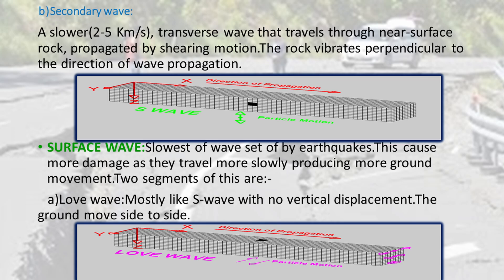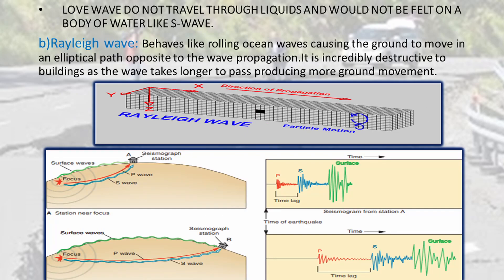Surface waves are the slowest waves set off by earthquakes, but they cause the most damage because they travel more slowly, producing more ground movement. There are two types: love wave and Rayleigh wave. Love waves have no vertical displacement but the ground moves side to side, perpendicular to the propagation. A Rayleigh wave behaves like a rolling ocean, causing ground movement in an elliptical path opposite to the wave propagation. Rayleigh waves are incredibly destructive because they take much longer and cause more ground movement, knocking off buildings, foundations, and constructions.